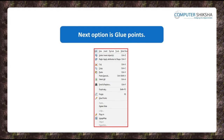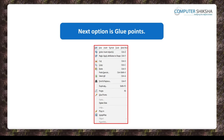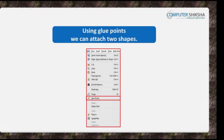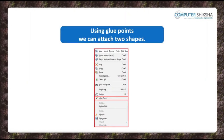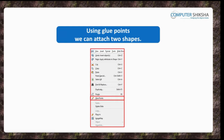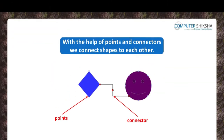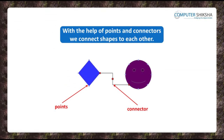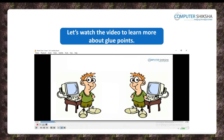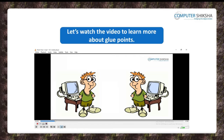Next comes the option for Glue Points. Do you know why we use Glue Points? Whenever you need to attach more than one shape at a point, you will need to use the option of Glue Points and connectors. Using these options you can connect such shapes to each other. Let us now watch the video and know more about Glue Points.